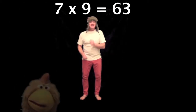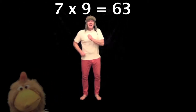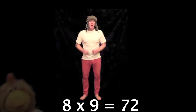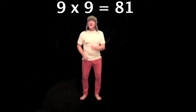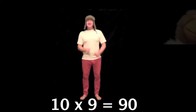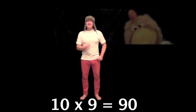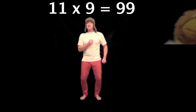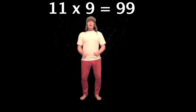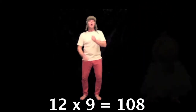7 times 9 is 63, 8 times 9 is 72, 9 times 9 is 81, 10 times 9 is 90, 11 times 9 is 99, 12 times 9 is 108.